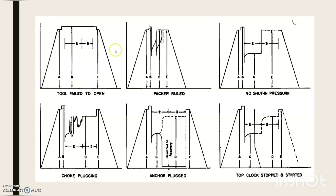There are some cases of misruns deduced from pressure charts. If the tool fails to open, the pressure recorders will continue to record mud hydrostatic pressure. If the packer failed, we won't get the shut-in pressure; instead, mud hydrostatic pressure will be measured every time due to incomplete zonal isolation. Another anomaly is not obtaining shut-in pressure correctly. If there is choke plugging, there will be an obstruction in the path of influx and a disturbance in pressure trends during the flow period. If the anchor is plugged, there is difficulty in shut-in pressure measurements and we will not get the average reservoir pressure. Also, if the clock is not working, it will lead to pressure anomalies and the test will be interrupted in the wrong way.